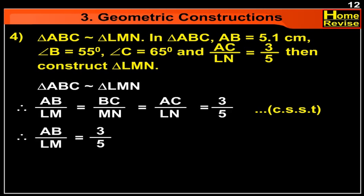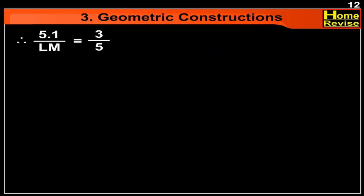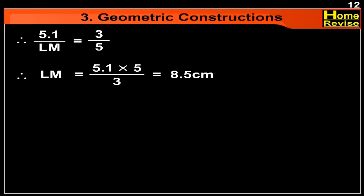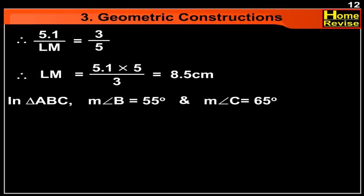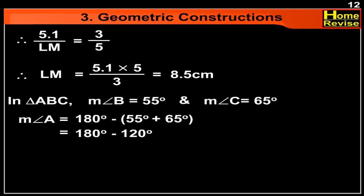Therefore, AB upon LM is equal to 3 upon 5. LM is equal to 5.1 into 5 upon 3, which equals 8.5 cm. Now in triangle ABC, measure angle B is equal to 55 degrees and measure angle C is equal to 65 degrees. So measure angle A is equal to 180 degrees minus (55 degrees plus 65 degrees), that equals 180 degrees minus 120 degrees, which equals 60 degrees.